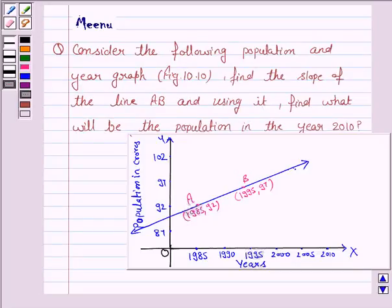Hello friends, let's discuss the following question. Consider the following population and year graph. Find the slope of the line AB and using it, find what will be the population in the year 2010.